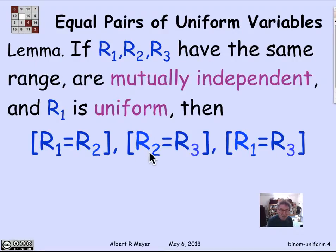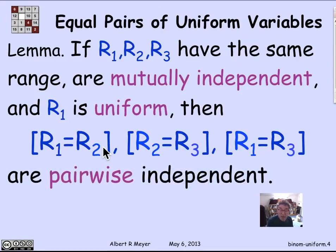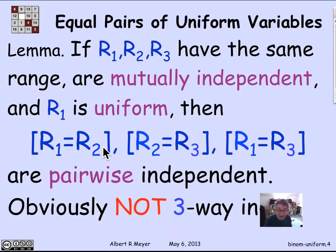Now, these events overlap. There's an R1 here, and an R1 there, and there's an R2 here, and an R2 there. So even though the R1, R2, R3 are mutually independent, it's not completely clear that these events are mutually independent. But in fact, they're not mutually independent. They're pairwise independent. They're obviously not three-way independent.